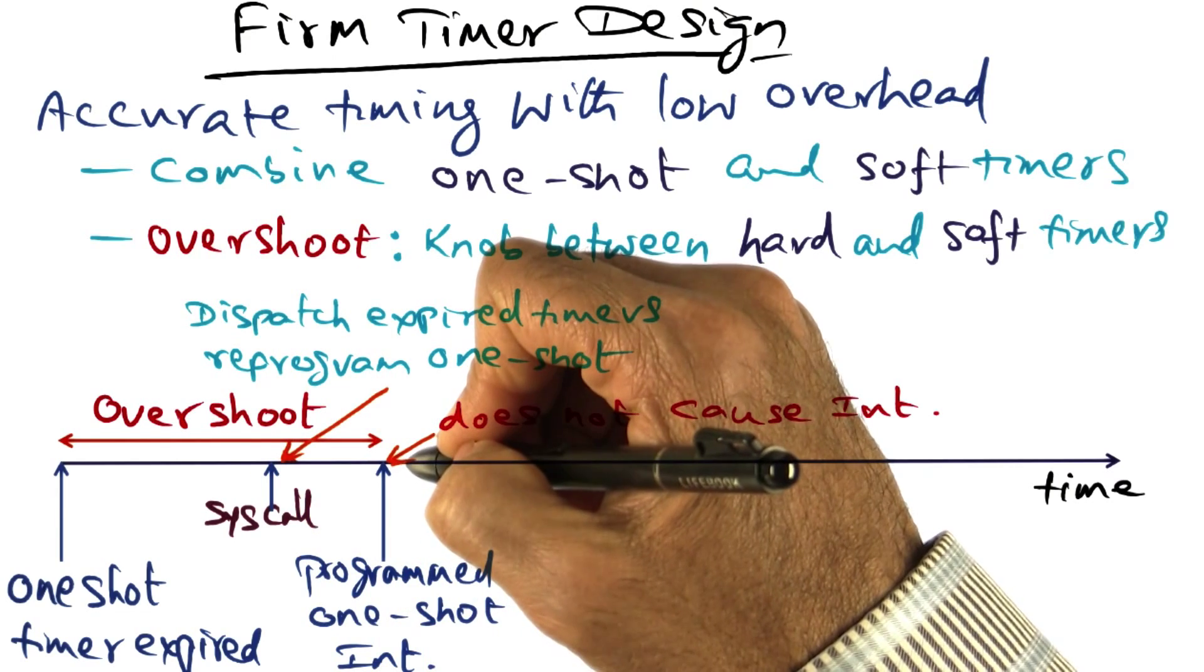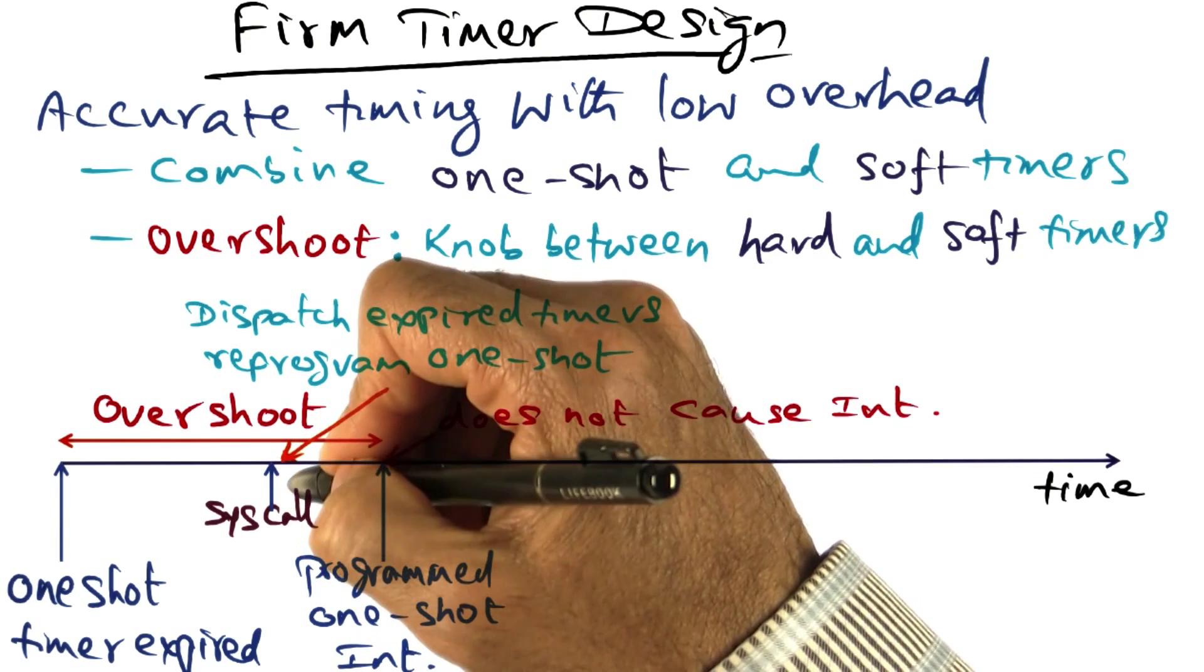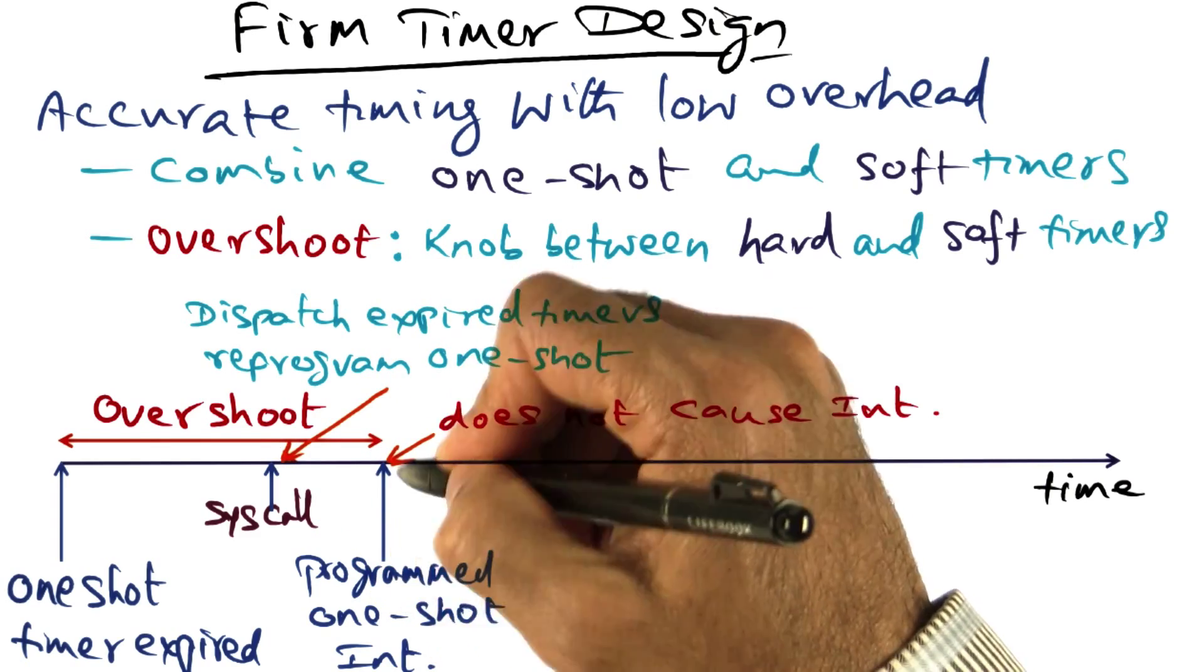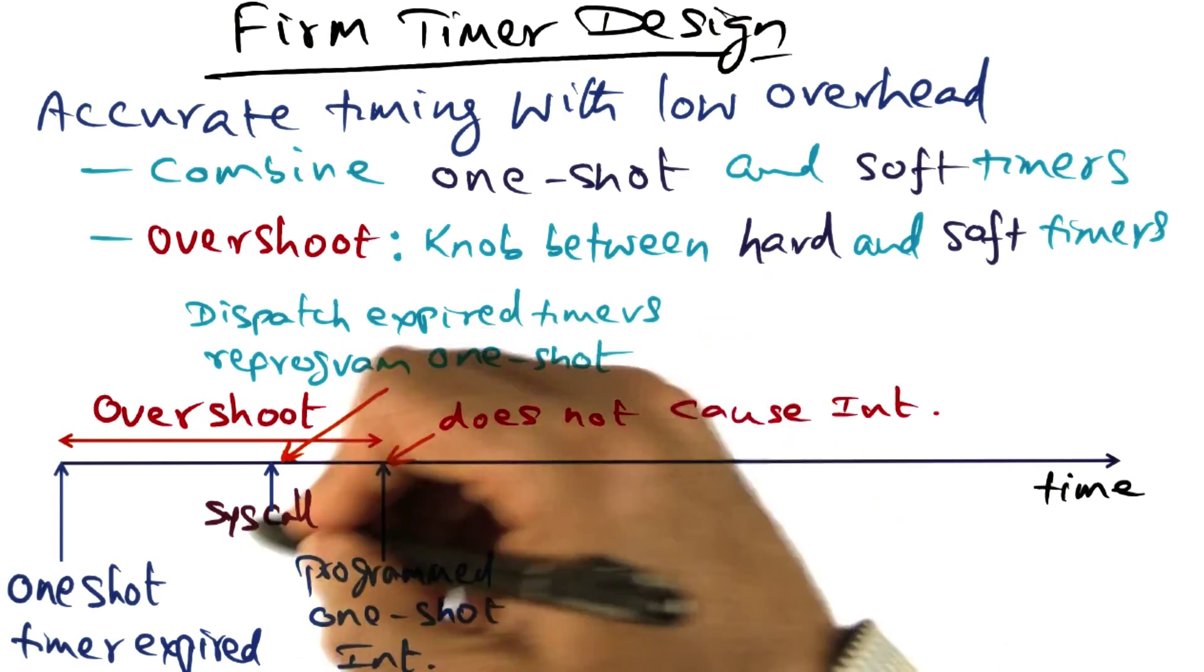Of course, if within this overshoot parameter, there is no system call or external interrupt that brings us into the kernel, then we will have this one shot timer going off at this point.